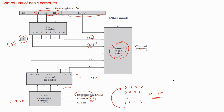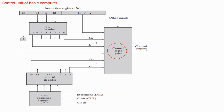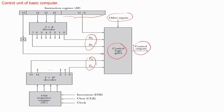With every increment, the sequence counter generates the next count and hence the next timing signal — for example, from t4 to t5, t6, etc. But if after t6 we want to return back to t0, then we have to clear the sequence counter. The control logic gates take the 12 inputs from the instruction register, the outputs of the decoder, the flip-flop, and the timing signals, along with other inputs, and contain the required hardware circuits to generate control outputs for performing specific micro-operations.